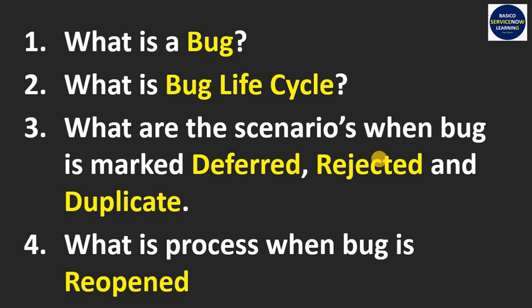Third, what are the scenarios when a bug is marked as deferred, rejected, and duplicate? And fourth, what is the process when a bug is reopened?